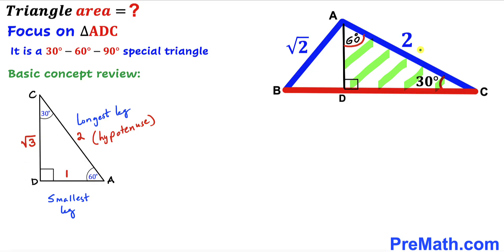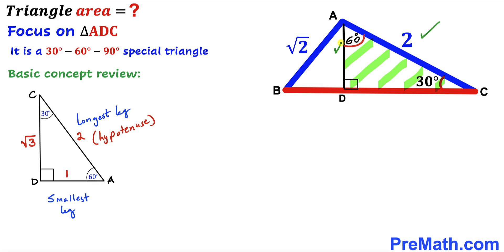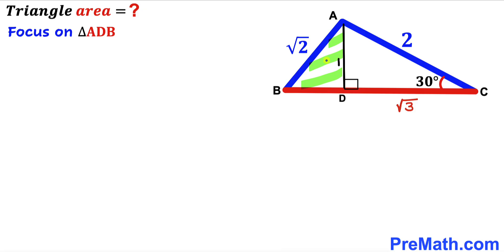Returning to our problem: the hypotenuse AC is 2 units, which is the longest leg. AD is our smallest leg, so it must be half of 2, giving AD = 1. The third leg CD must therefore be square root of 3. Now let's focus on the other right triangle ADB.